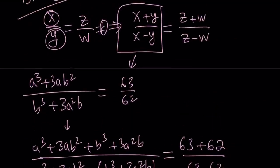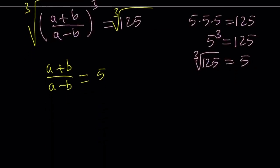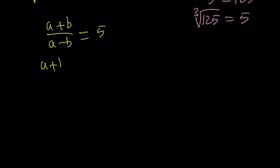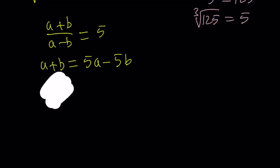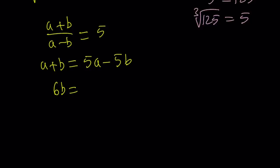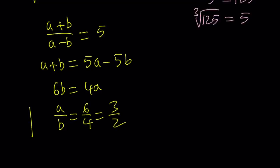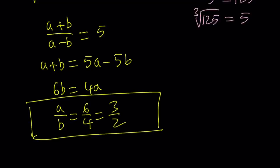Our goal was to find a over b, and we can easily do that from here. Cross-multiplying gives a plus b equals 5a minus 5b. Adding 5b to both sides gives 6b, and subtracting a gives 4a. So 6b equals 4a. Dividing by b and then by 4, we get a over b equals 6 over 4, which can be written as 3 halves. So that is the first method — componendo dividendo. Let's take a look at the second method.